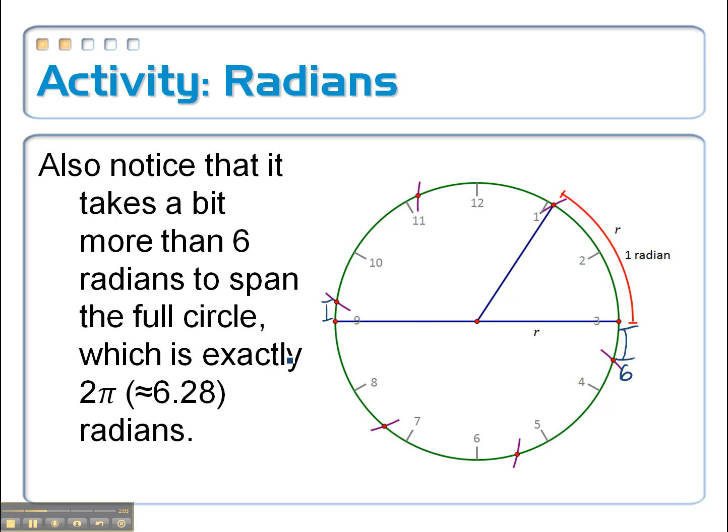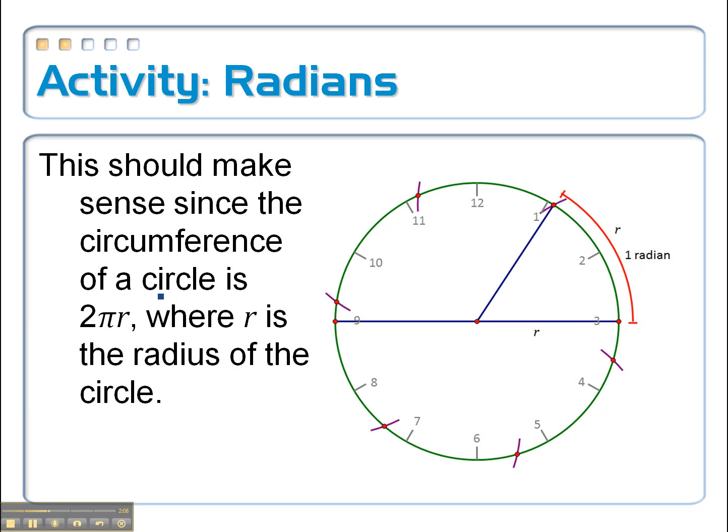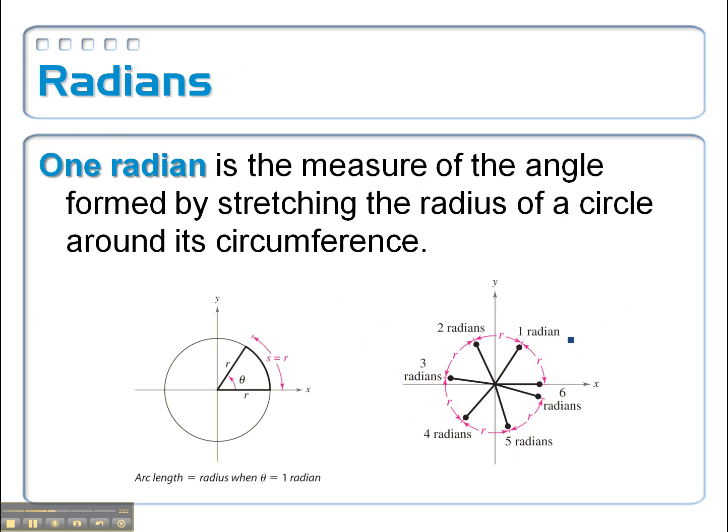To make a full circle, and that should make sense, because probably about the sixth grade you learned the circumference of a circle is 2 pi r, and just say that our radius here was equal to 1 unit.